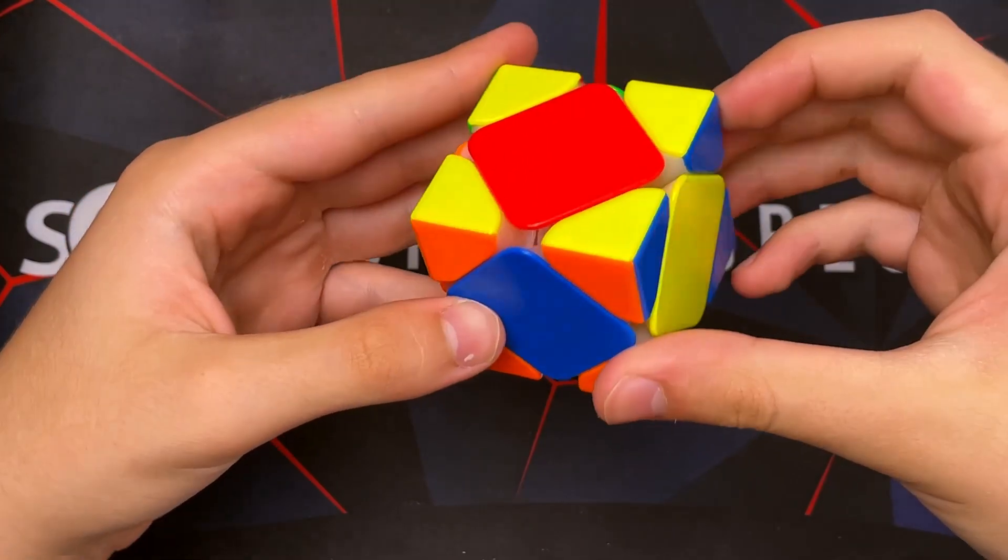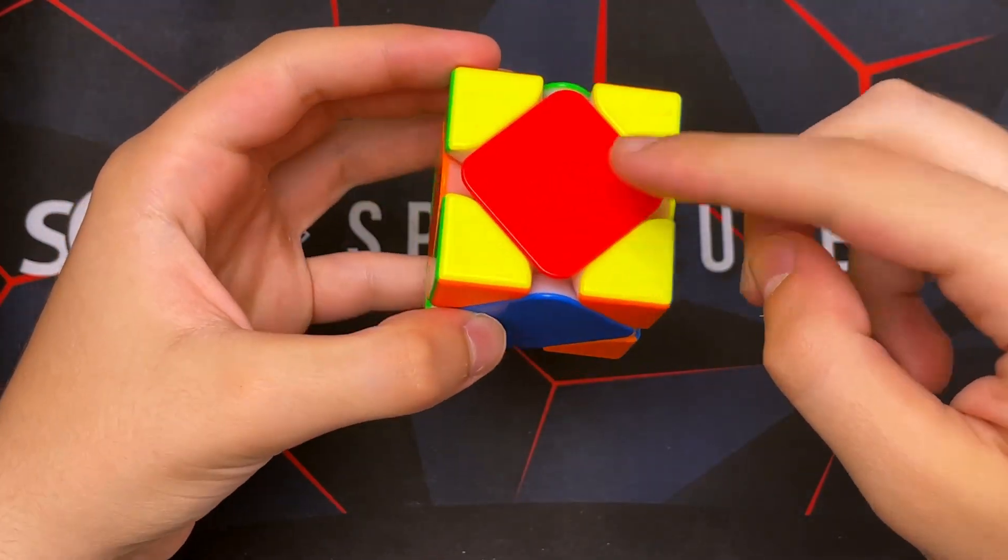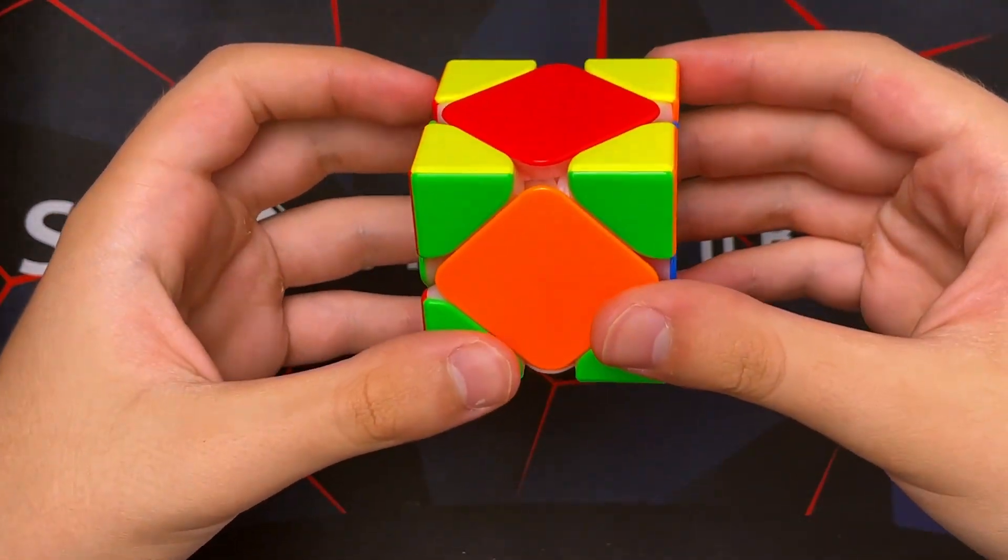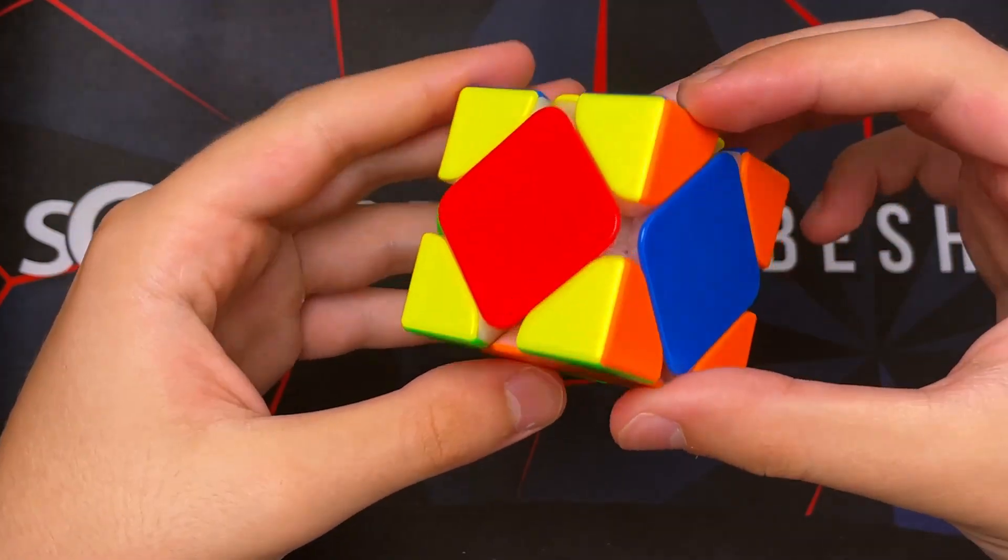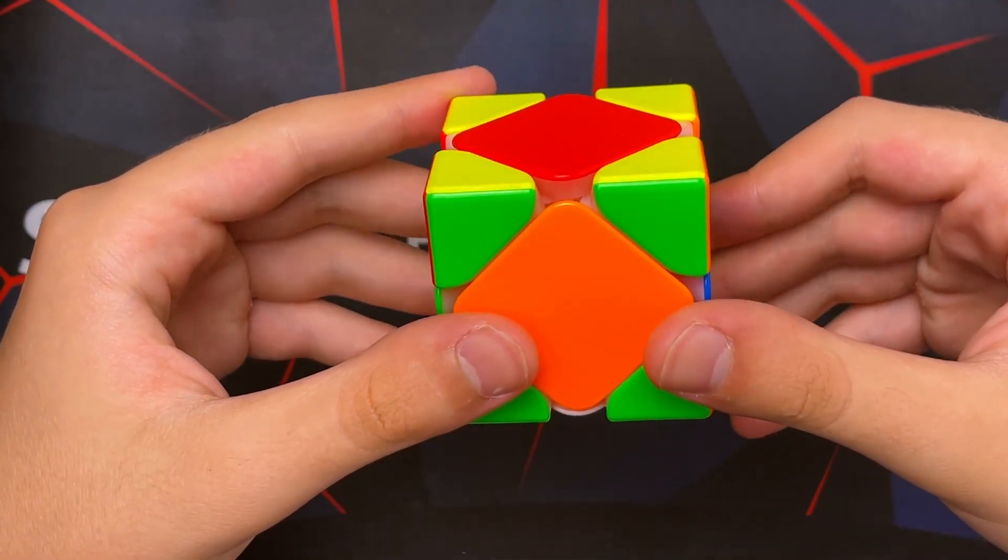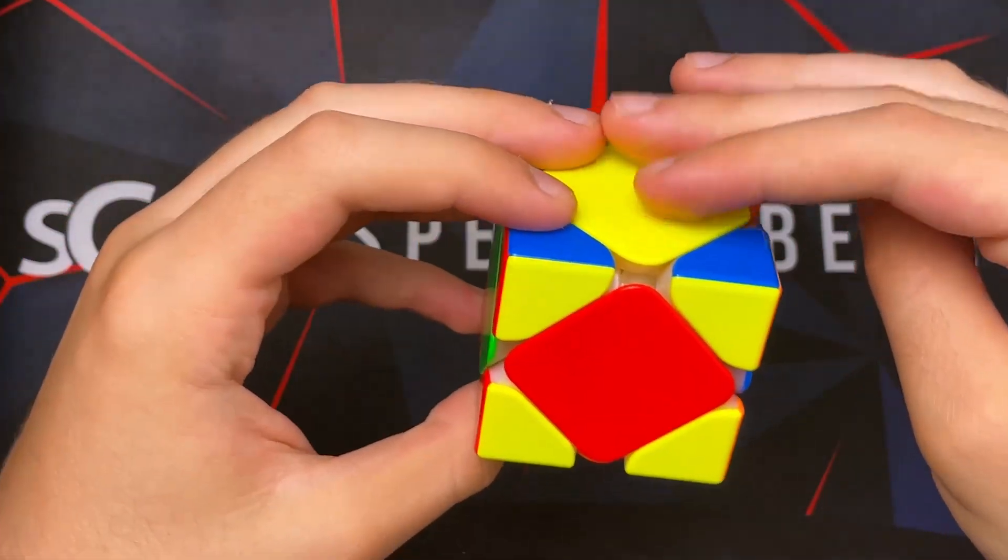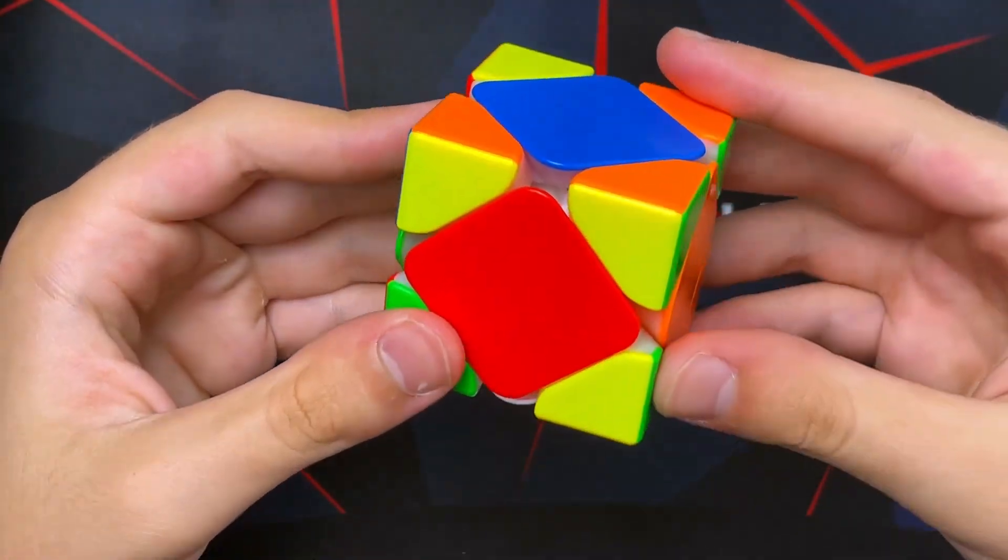Now the next thing we want to do is solve the yellow on top. This is very easy because we only have one algorithm that we need to do, but this time we're going to do a different variation of it. Start by holding wherever yellow is at the back and then do the algorithm.